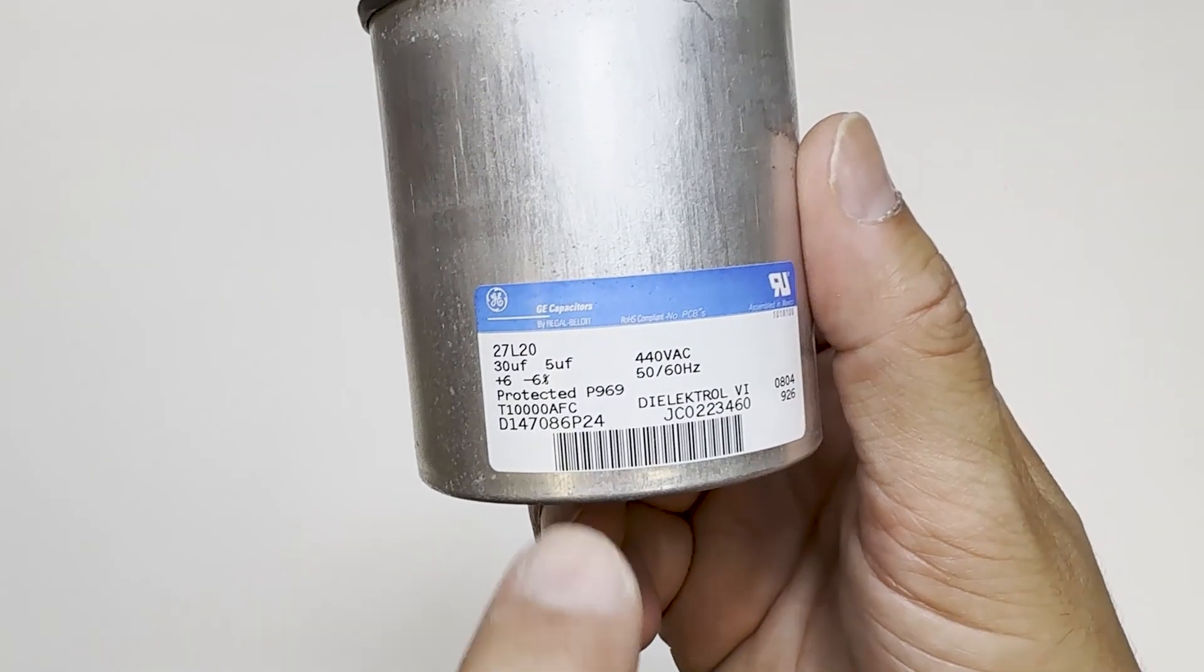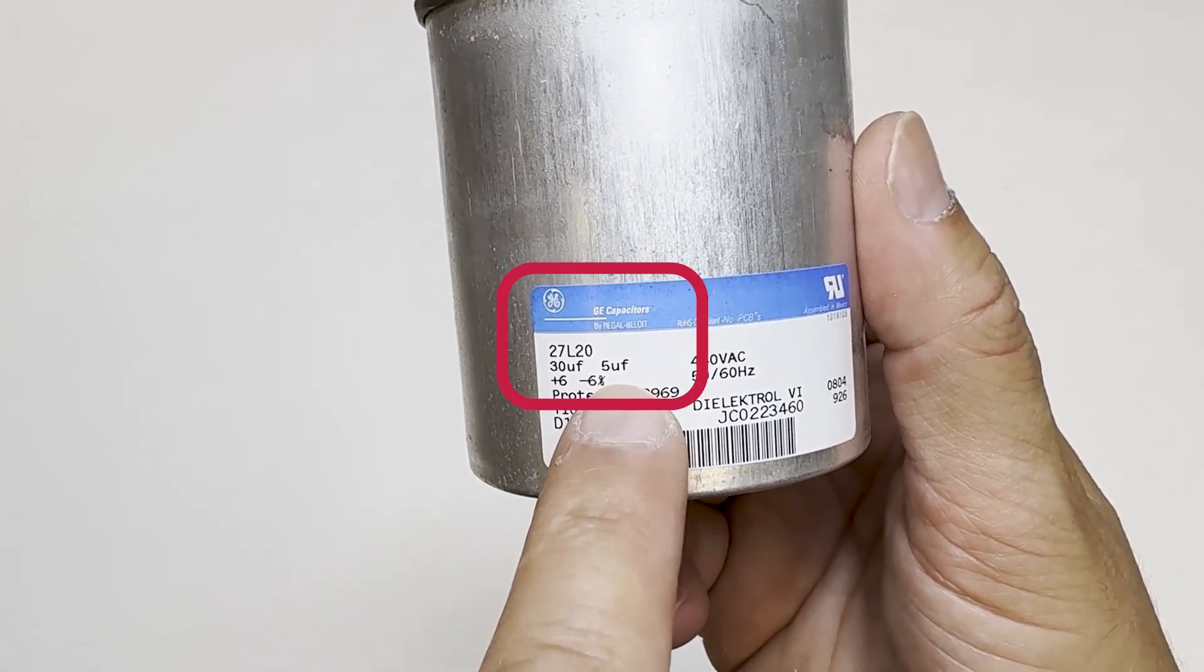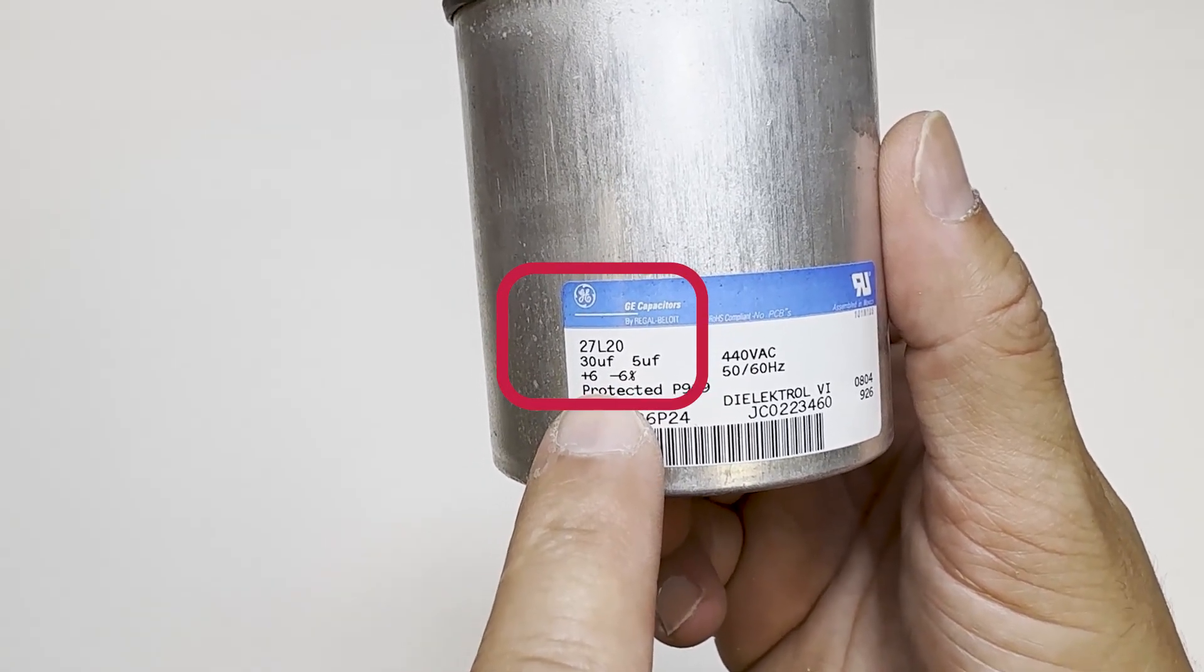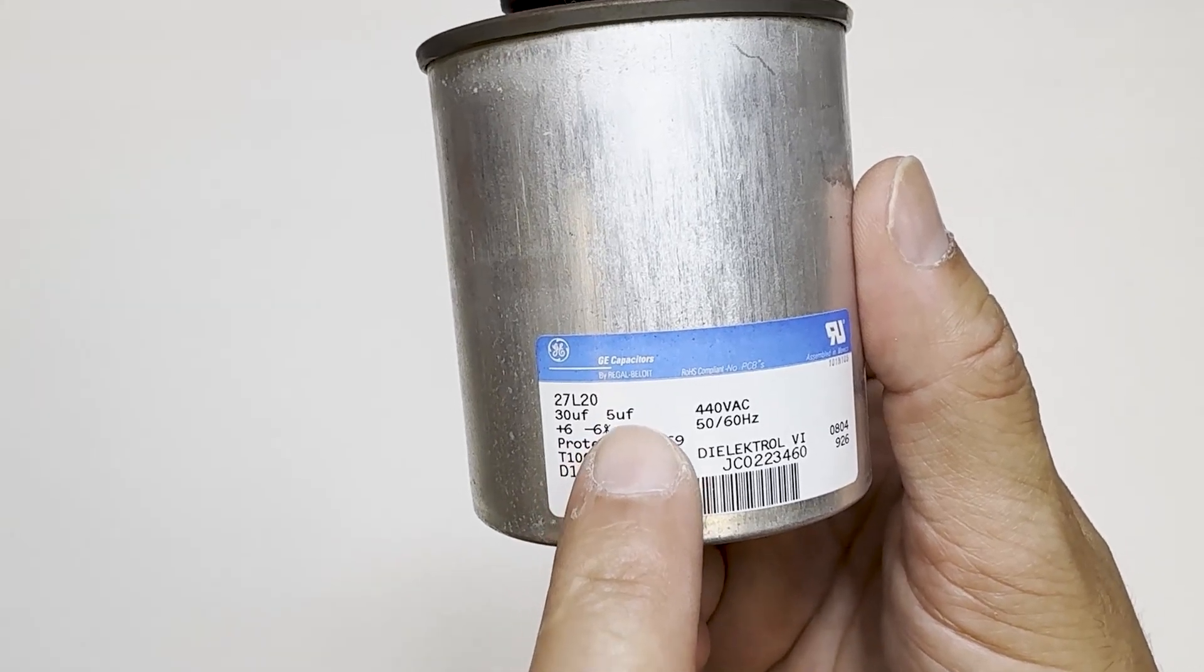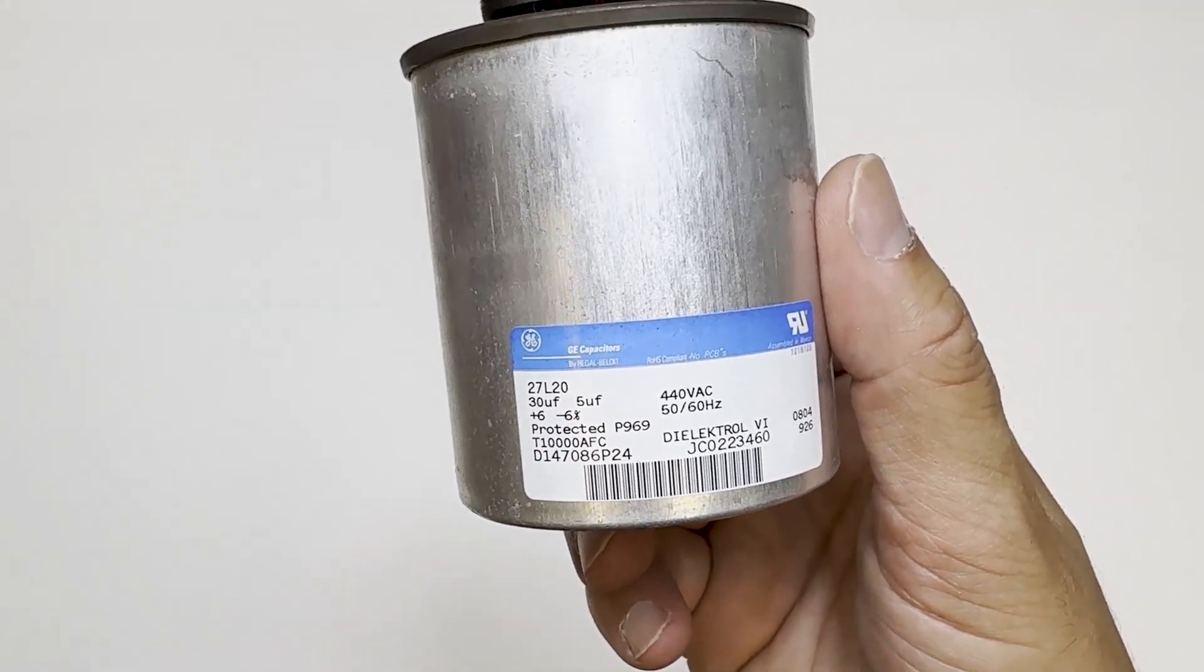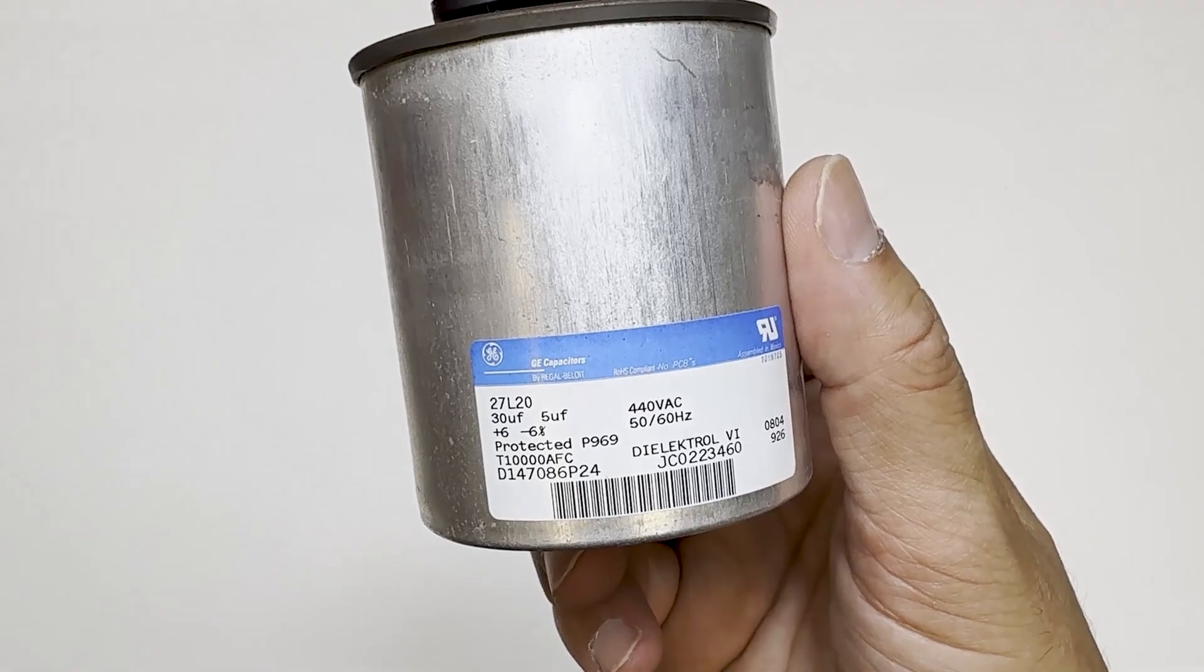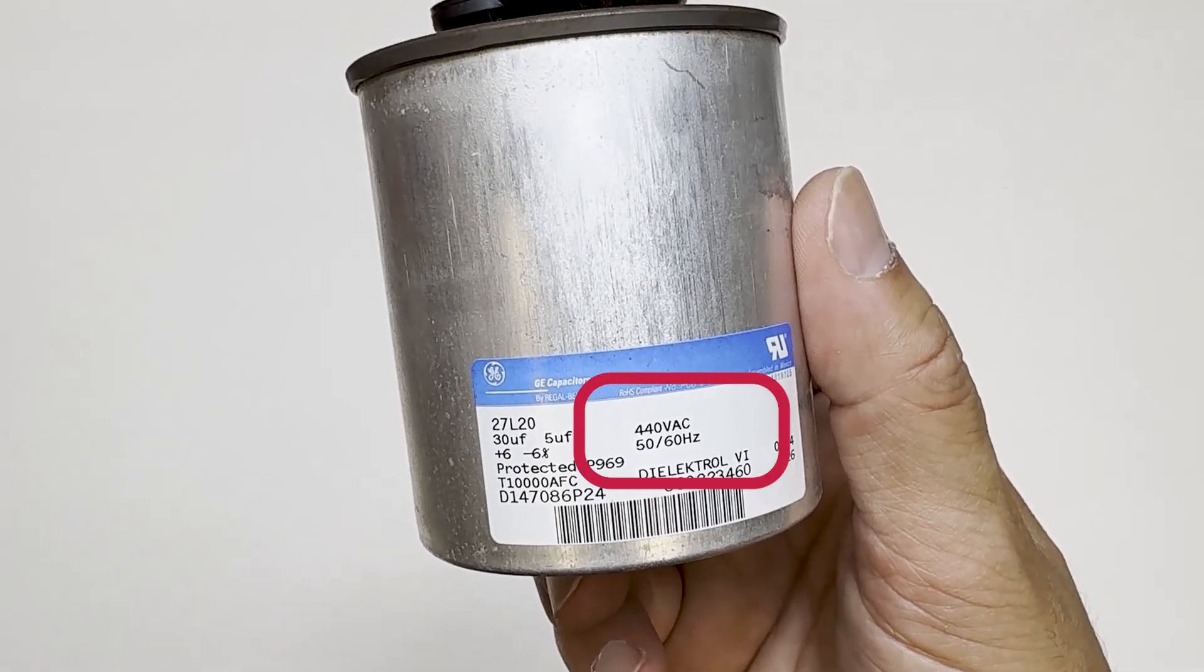Now let's look at the rating. It's labeled 30 by 5 microfarads. Meaning, 30 microfarads goes to HERM, the compressor, 5 microfarads goes to fan, and each gives you a tolerance of plus or minus 6%. We also have the voltages 440 and the frequency.